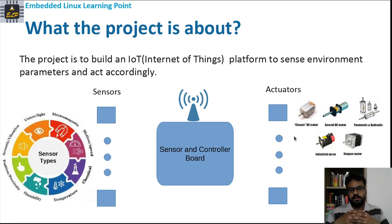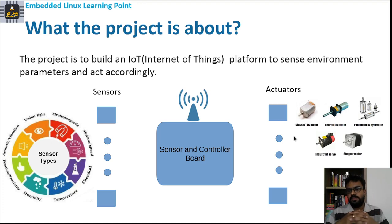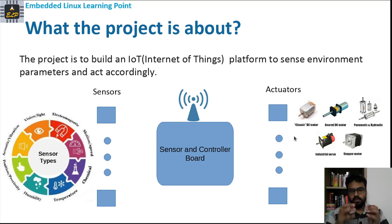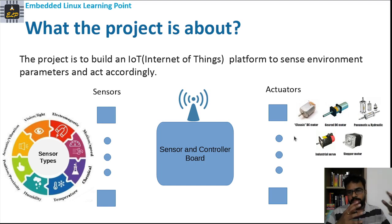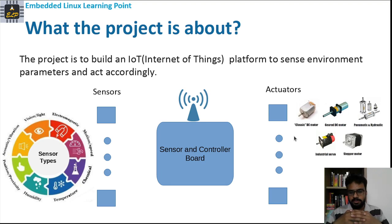With this platform, we should also be able to control few things like a classical DC motor or a general DC motor, any hydraulics or it could be any industrial server, a stepper motor or it could be any switch — for example, it could be solenoid valve. Those come under actuators. The idea is to sense environment parameters and control any of these actuators, and this platform is going to help us join this.